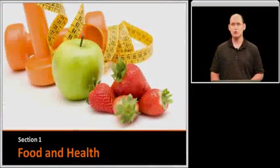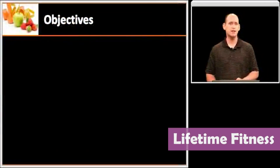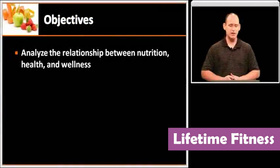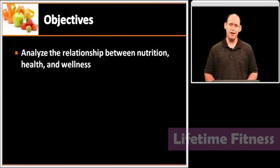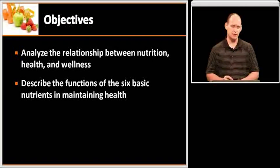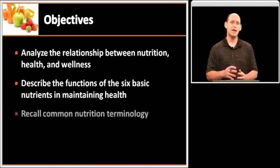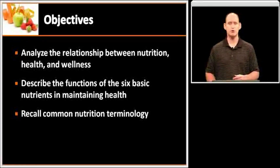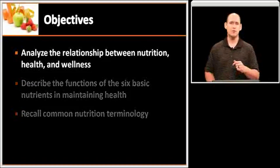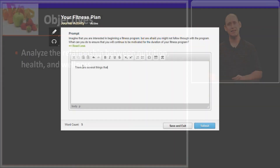Our last featured elective is Lifetime Fitness. Like many of the electives, Lifetime Fitness includes journal activities such as one from the Food and Health segment. Students make real-world connections by synthesizing what they've learned with their own personal experiences. In this activity, students are asked to consider whether it's possible to stay healthy and become physically fit without taking nutrition into account. These journaling opportunities help students solidify their learning by connecting new knowledge to their own lives.